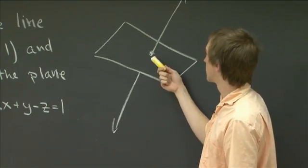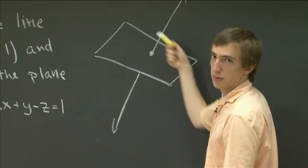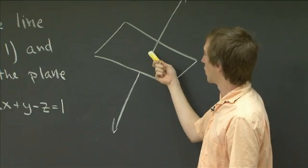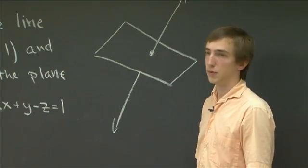In order for there to be no points of intersection, we would have to have a line which was parallel to the plane, which is very unlikely. Otherwise, we expect exactly just one point of intersection.